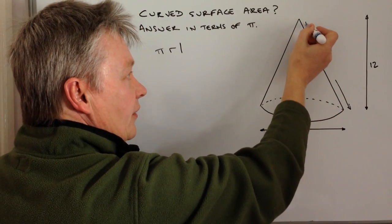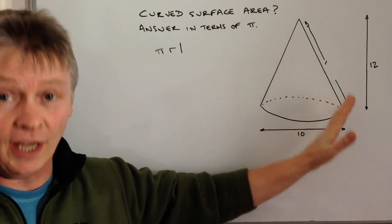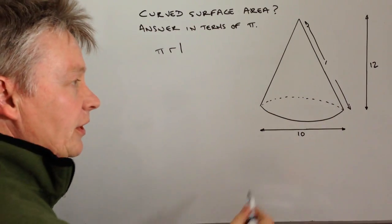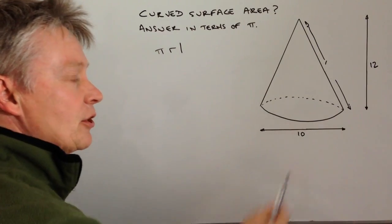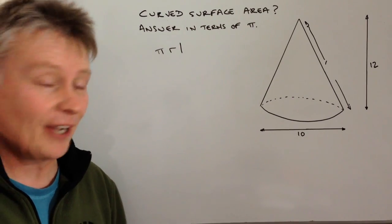Now, what they've given you in the question is the overall height of the cone, so we need to use these two bits of information to get the slant height, and we're going to do that by using Pythagoras.